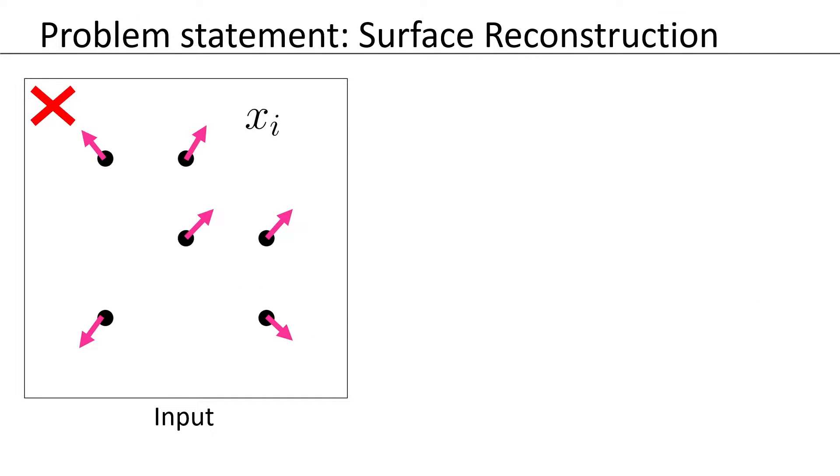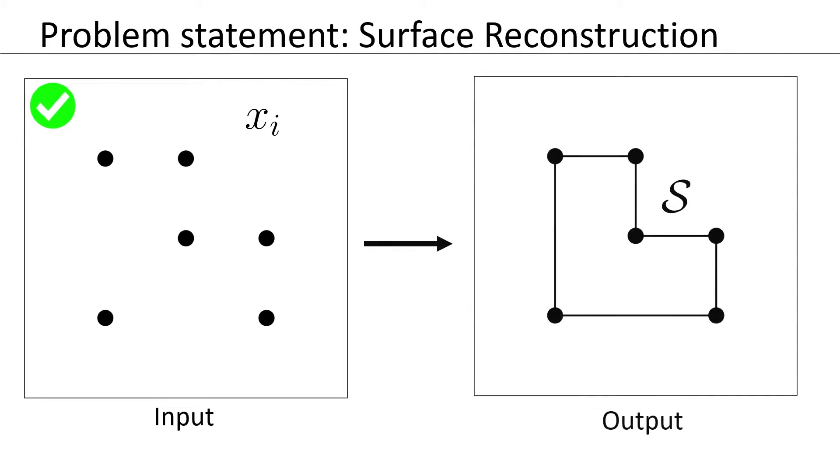Given an input unoriented point cloud, our goal is to find the surface on which these points were sampled. One way of representing this surface is the implicit representation.